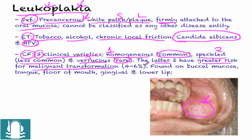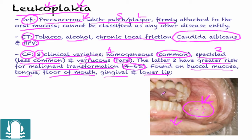The malignant transformation rate for any type of leukoplakia is about 4% to 6%. Leukoplakia can be found on the buccal mucosa, the tongue, the floor of the mouth, the gingiva, and the lower lip, as indicated in the diagram.